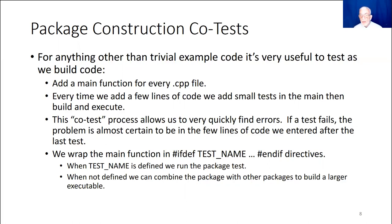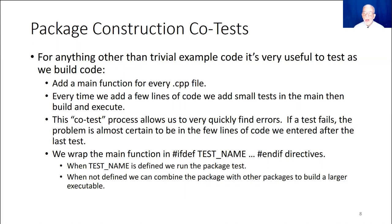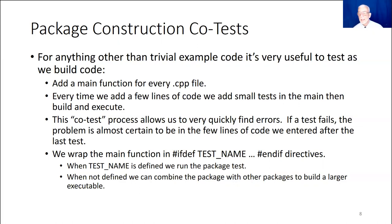This process allows us to find errors very quickly. If something fails, there's an overwhelming probability — almost probability one — that the failure is in the last few lines of code we entered. So it saves a whole lot of time finding errors and fixing them in your code. There's a lot of information in source code for a big design, and there are going to be initially some errors. This is a great way to stay on top of that process and make it as easy as possible.